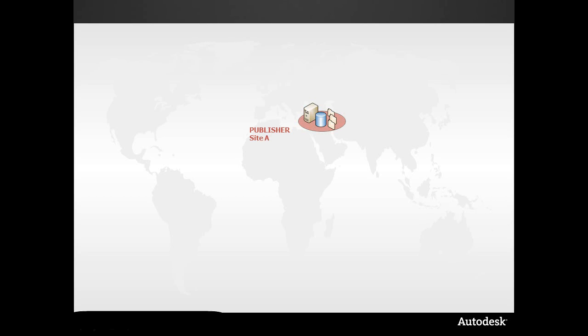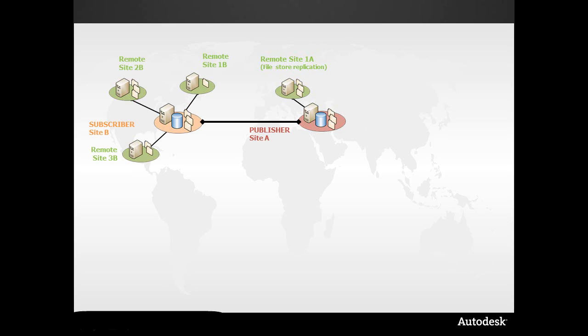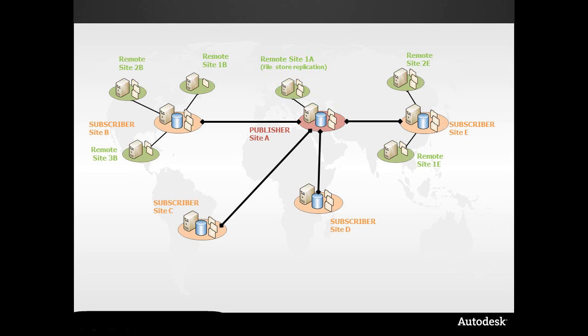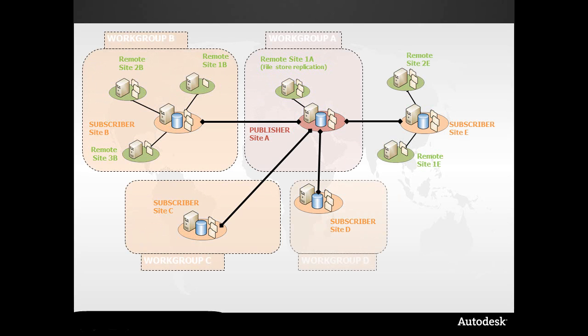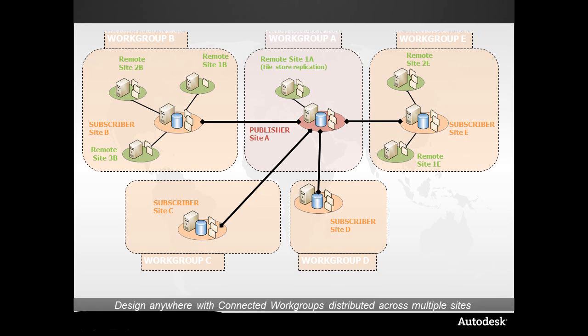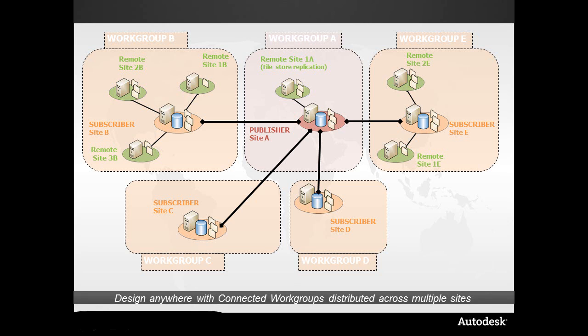Another way to put this — we can have a main site, and we can actually have a remote site off of that, have another site subscribe to it, have sites based off of that, and we can go completely global. What we call these are workgroups — a collection of users and a collection of data. Workgroups A through E show us how we're all tapping from the same well. This is essentially one big vault.